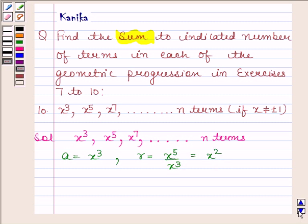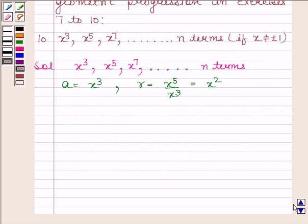We know that sum to n terms of the GP is given by a into 1 minus r to the power n upon 1 minus r.